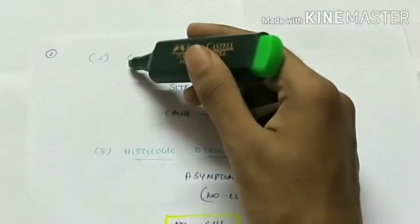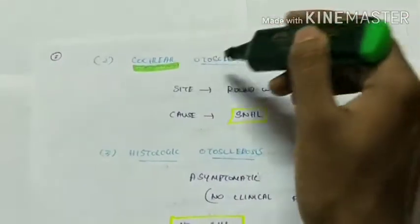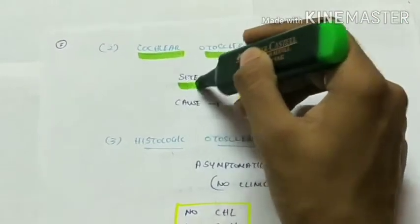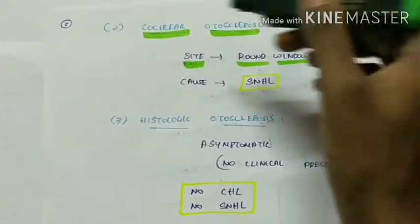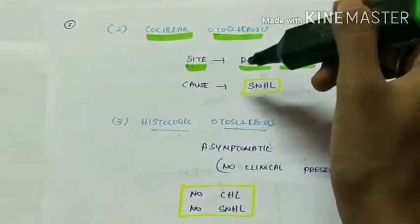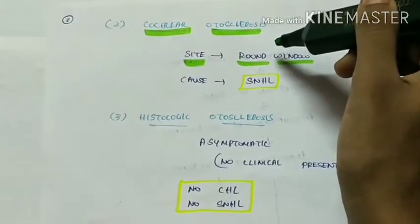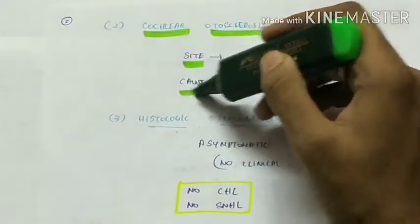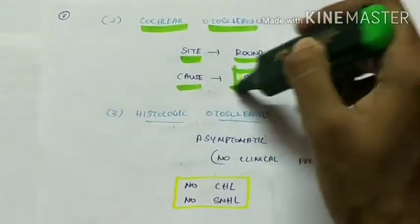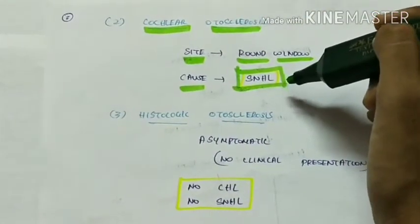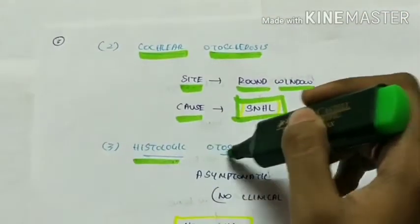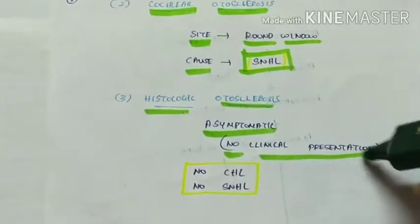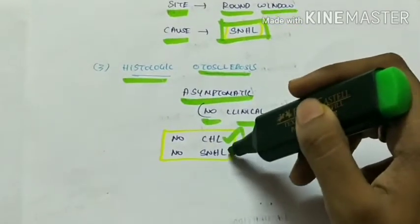The second type is cochlear otosclerosis, which occurs at the round window and causes sensorineural hearing loss, in contrast to stapedial otosclerosis which occurs near the oval window and causes conductive hearing loss. The third variety is histologic otosclerosis, which is asymptomatic — there is no clinical presentation and no hearing loss of either type.